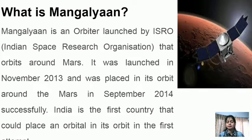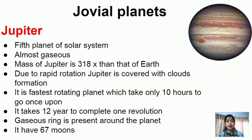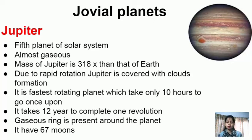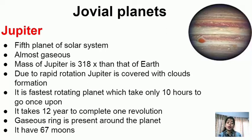Jupiter is the 5th planet and the biggest planet in the solar system. It is almost entirely made up of gases and has faint rings around it. Its mass is 318 times more than Earth's. Due to rapid rotation, cloud formations occur. Jupiter is the fastest rotating planet, taking only 10 hours to complete one rotation. Its revolution time is 12 years.